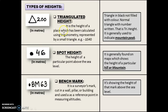For triangulated height, it is the height of a place which has been calculated using trigonometry, represented by a small triangle. Trigonometry is a branch of mathematics dealing with the relations of the sides and angles of triangles, and with the relevant functions of any angles. The triangle is black, not filled with color — just a normal triangle with a number beside it, indicating the triangulated height in meters. It is generally used to indicate a mountain peak.